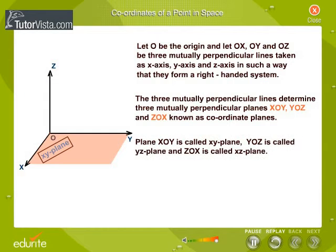Plane XOY is called the XY-plane, YOZ the YZ-plane, and ZOX the XZ-plane.